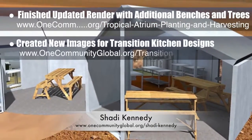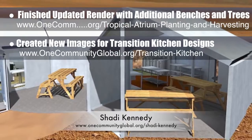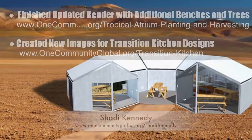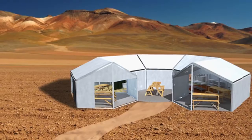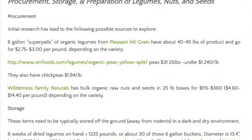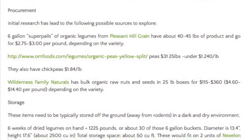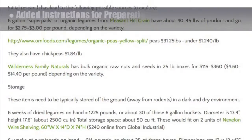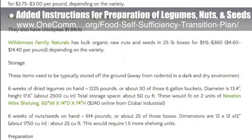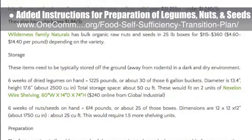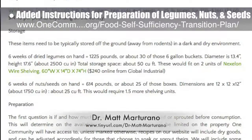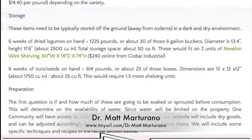Shoddy then created new images for the transition kitchen, designed for feeding 20 to 50 people in remote locations while more permanent facilities are being built. As part of our food self-sufficiency transition plan, we also added instructions for general procurement and preparation of legumes, nuts, and seeds to our website, as calculated by naturopathic doctor Matt Martorano, creator of the coherent model for comprehensive digestive health.